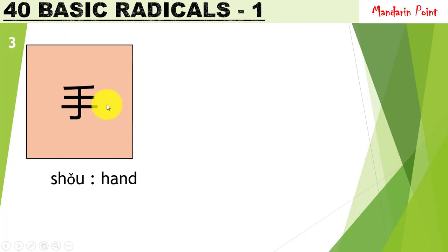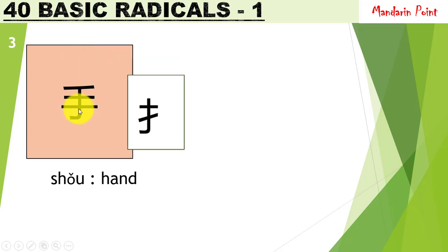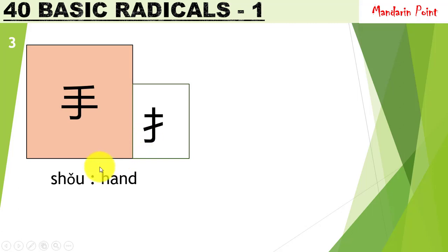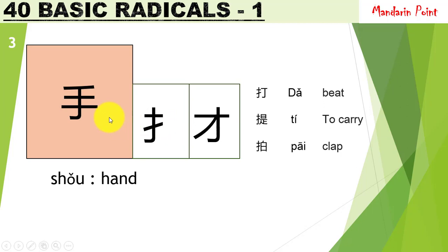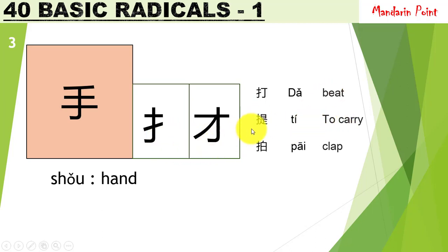The third radical is 手 shǒu, meaning 'hand.' It also has short forms. All these forms represent hand, and any character with this radical will represent an activity performed by hand. For example, 打 dǎ meaning 'to beat' — you can see this radical on the left side. 提 tí meaning 'to carry' also has this radical on the left side. And 拍 pāi meaning 'clap' — without hands, how can you clap? This radical is present in that character too.